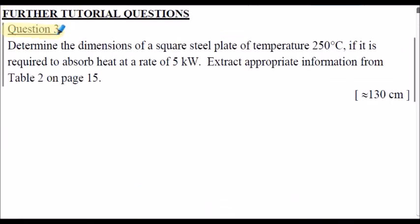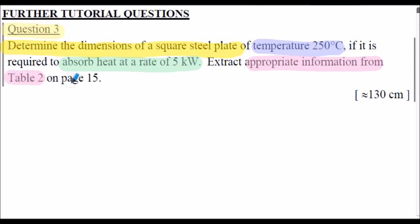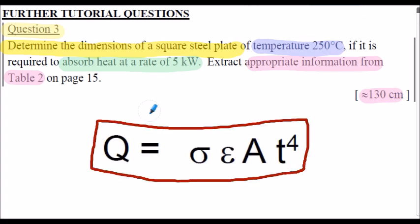Here's question 3, extracted from the workbook. We're asked to determine the dimensions of a square steel plate of temperature 250 degrees C, if it's required to absorb heat at a rate of 5 kilowatts. We can extract the appropriate emissivity information from table 2. Within this calculation, we're given the heat absorbed Q by the square steel plate, so we need to determine the area of the square plate. I'd encourage you to pause and attempt question 3.